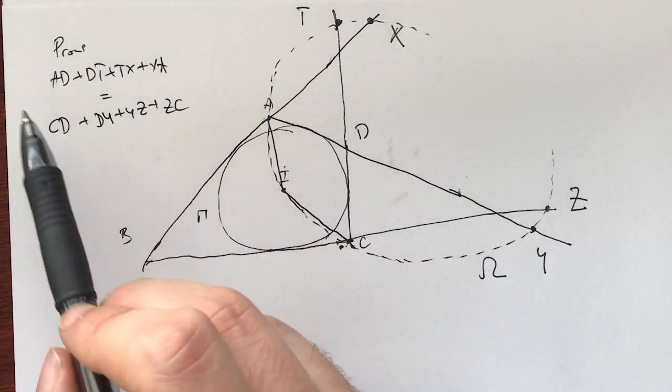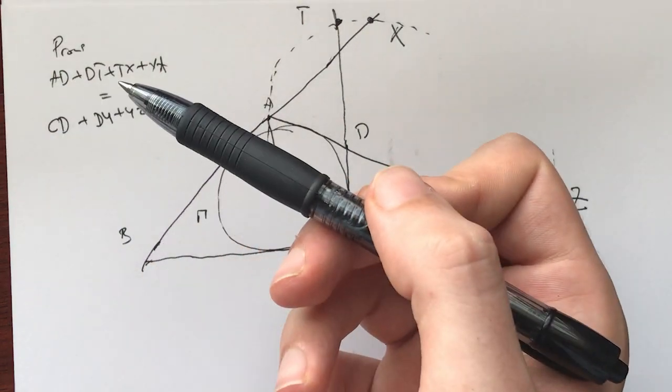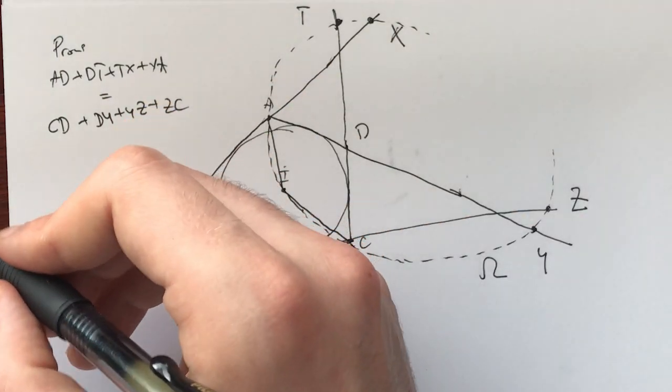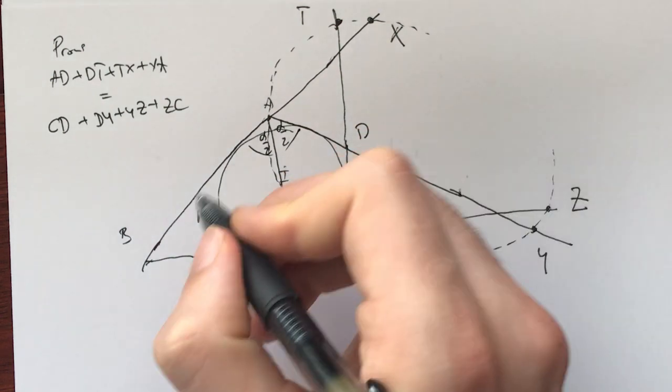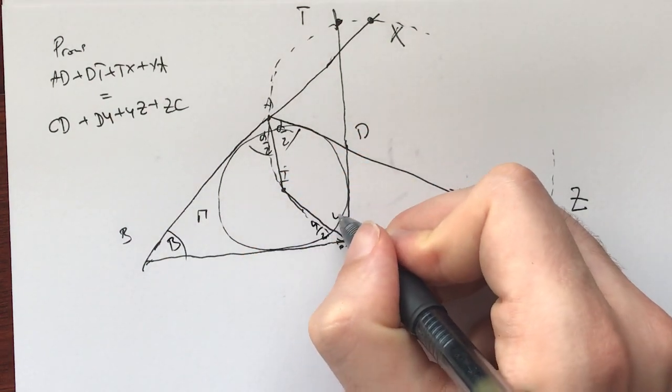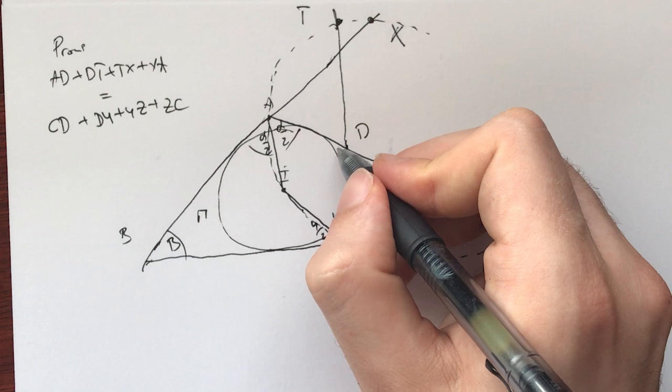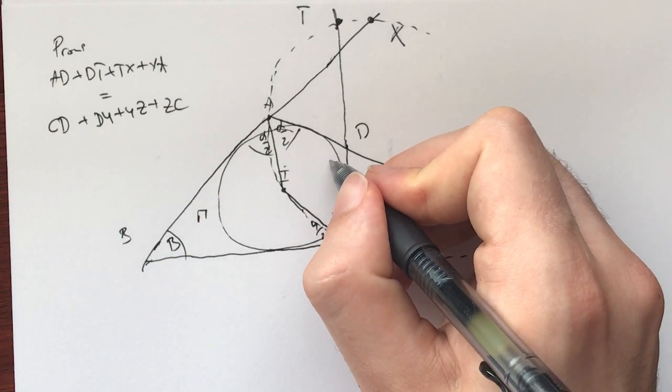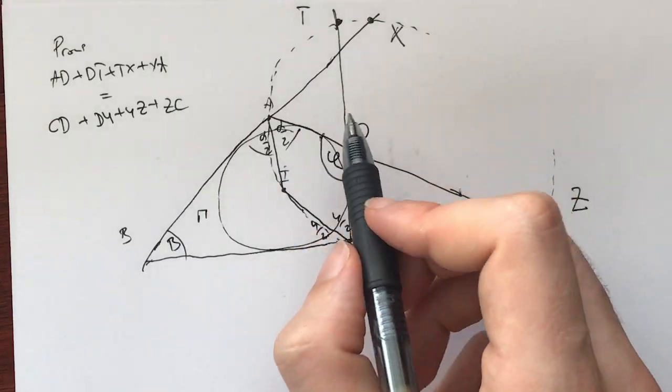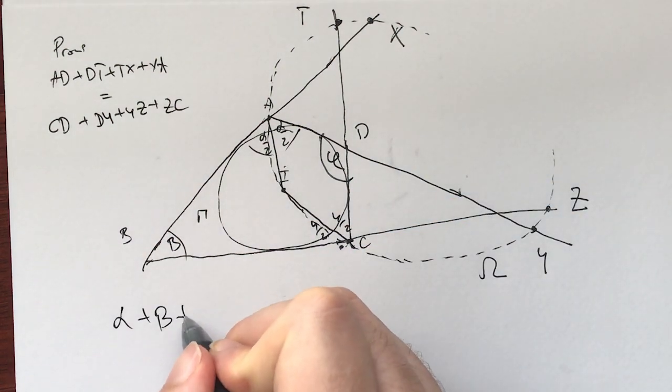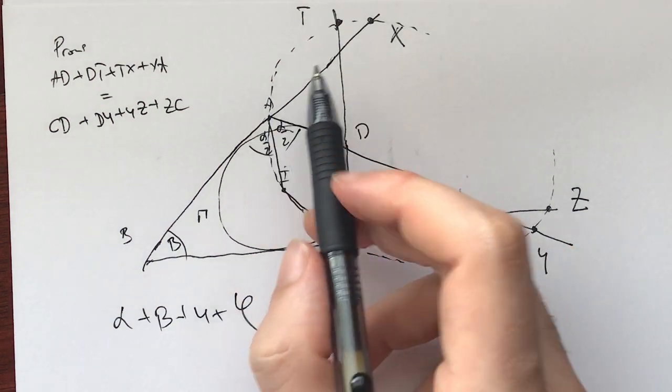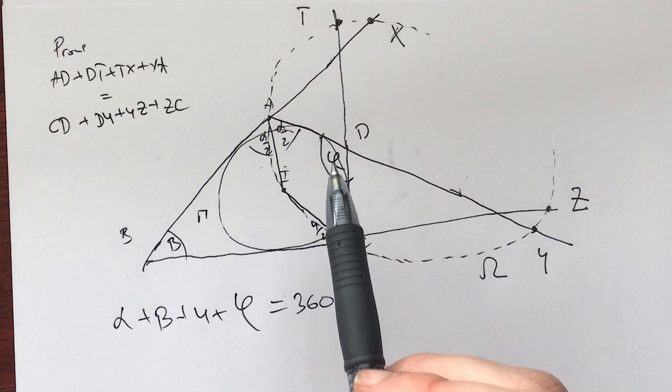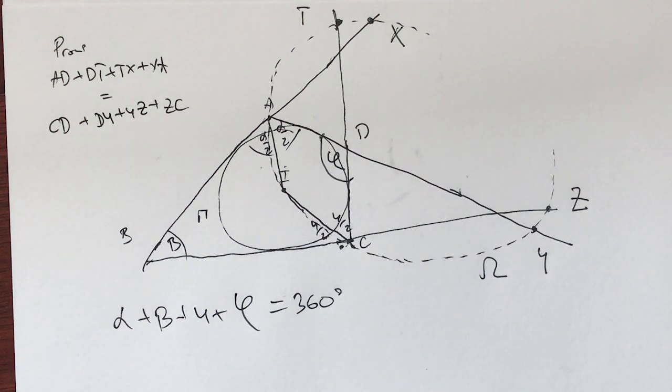Now what's the first thing we can do in this problem to explore it further? For me, the first thing here is like, let me just do angle chasing. Let me see what angles I have. Let's call this alpha half, alpha half, this beta, this gamma half, gamma half, and this whole angle, let it be called phi. And now we have the four angles. We have alpha plus beta plus gamma plus phi is 360.